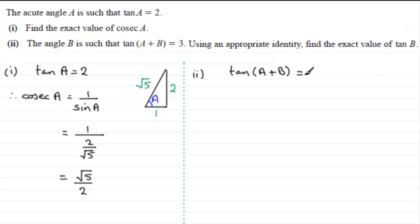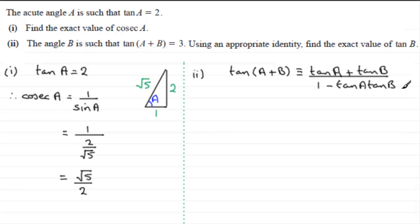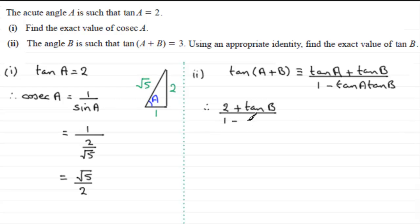The tan of A plus B equals tan A plus tan B, all divided by 1 minus tan A times tan B. This is an identity you should be familiar with. Using this identity, and substituting tan A equals 2, we get 2 plus tan B, all divided by 1 minus 2 tan B. And we're told tan of A plus B equals 3, so this expression must equal 3.